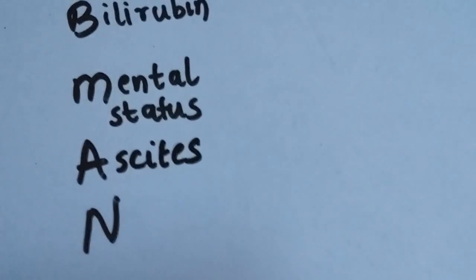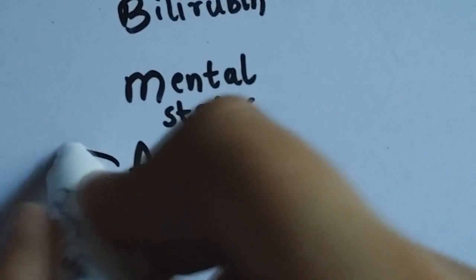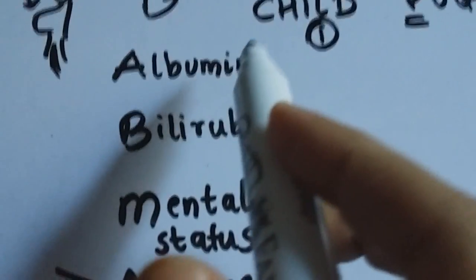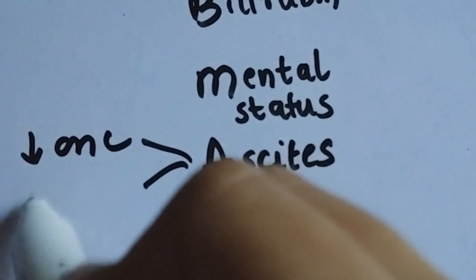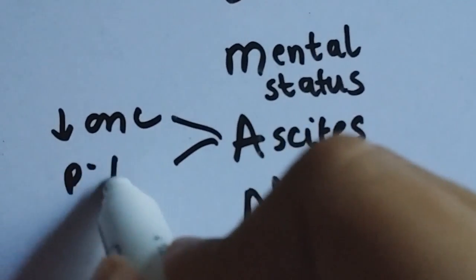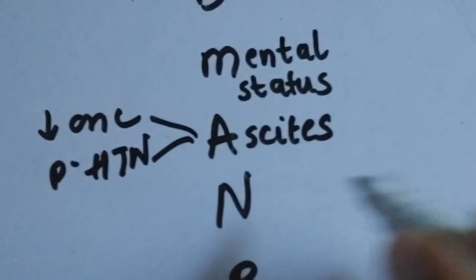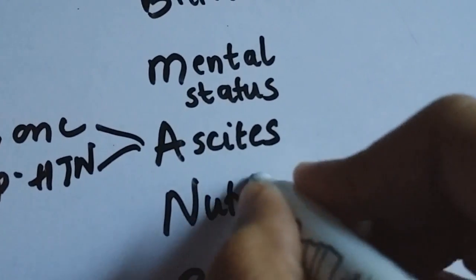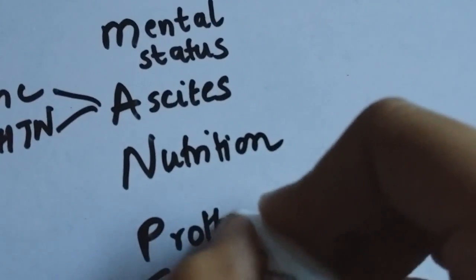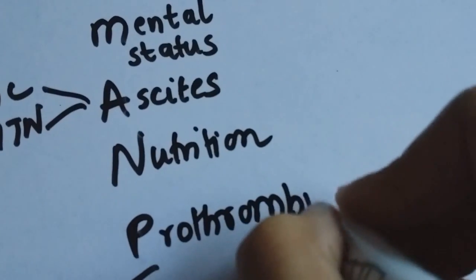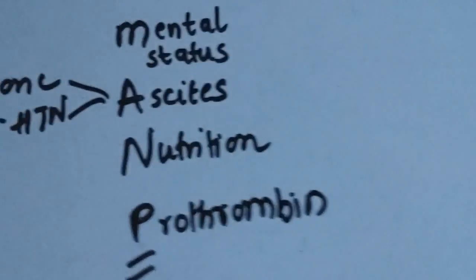And this is because of various reasons. Basically, two reasons you should know of is because albumin decreases, and this decreases the oncotic pressure. And because of portal hypertension, which is seen in patients with liver disease. N is for nutrition, and P is for prothrombin time, like I said before. This is Pugh's modification.